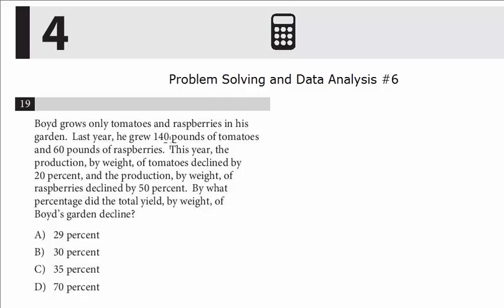So we have a couple of different years. Let's start with last year. We know he grew two types of fruits - tomatoes are fruit - and those were tomatoes and raspberries, 140 and 60. Get in the habit for this type of question, because it's asking for the percentage decline of the whole garden, put the total out here.